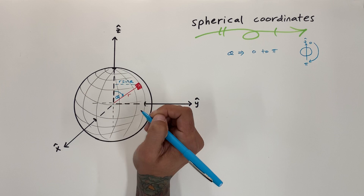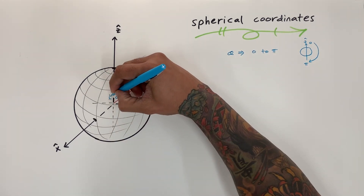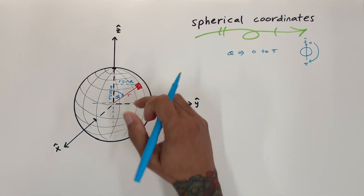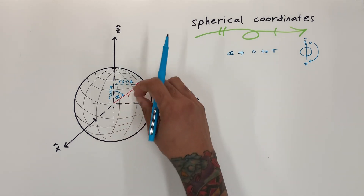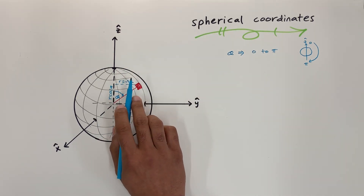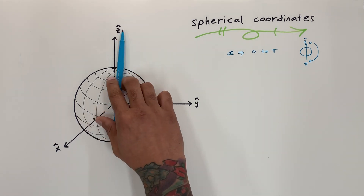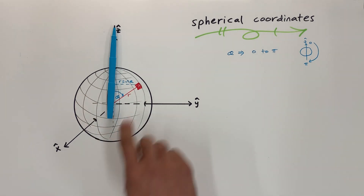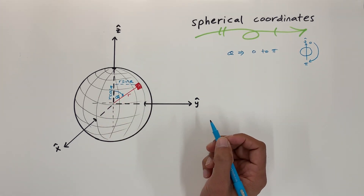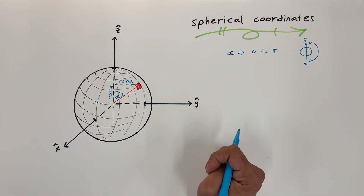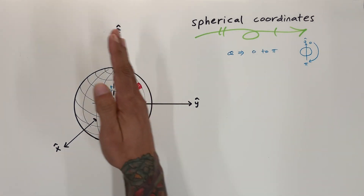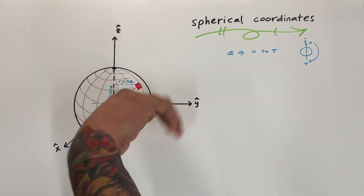We're going to use some trig here. This side here is going to be R sine theta, and this side here is going to be R cosine theta. If we're at a different spot on the sphere, R times the angle we're changing is going to be exactly this length here. As we go up, this angle changes. If this angle is all the way at the top, we just have R because sine of 90 degrees equals 1. Theta sweeps from Z all the way to negative Z.